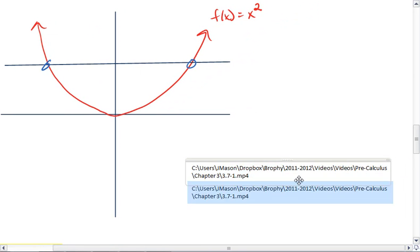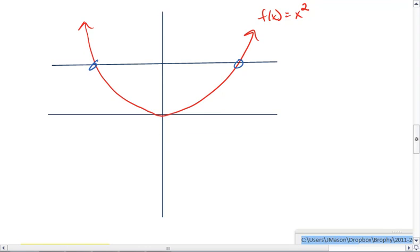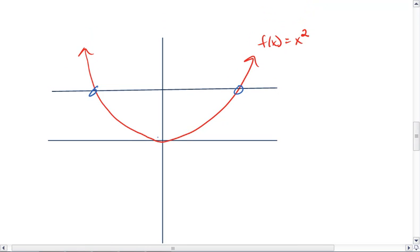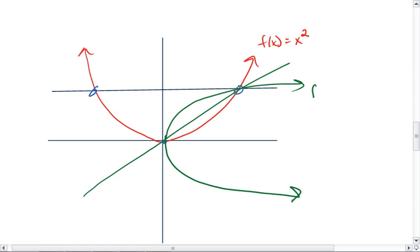And in fact, what we see is that the inverse will look something like this. So our green parabola is now f inverse of x. And that is in fact not a function. That's the horizontal line test.